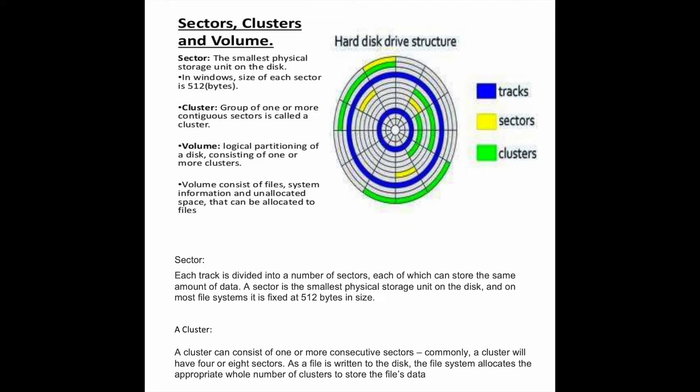What is a cluster? A cluster is a group of one or more contiguous sectors. It can consist of one or more consecutive sectors. Commonly, a cluster will have four or eight sectors. As a file is written to the disk, the file system allocates the appropriate whole number of clusters to store the file's data.